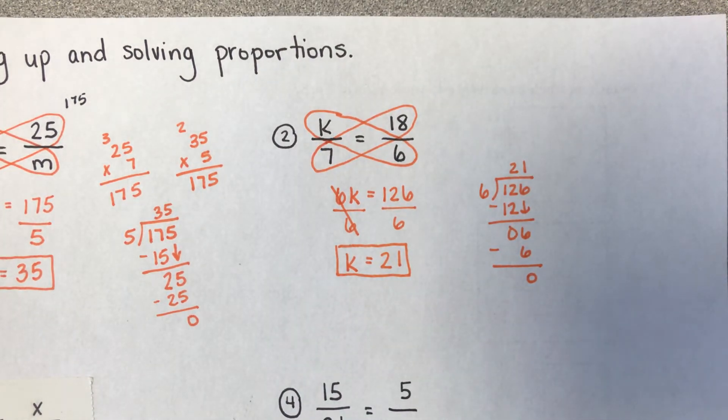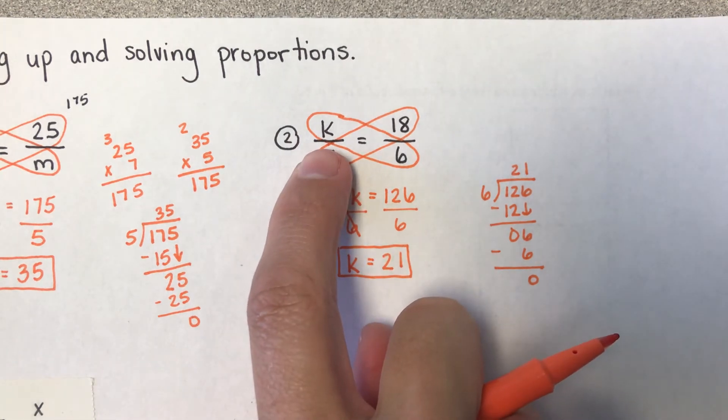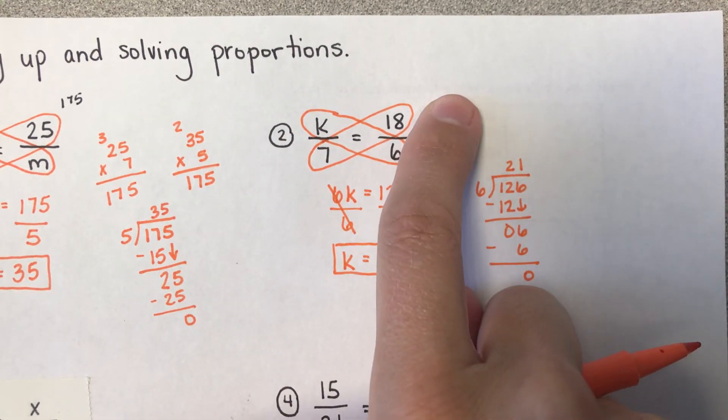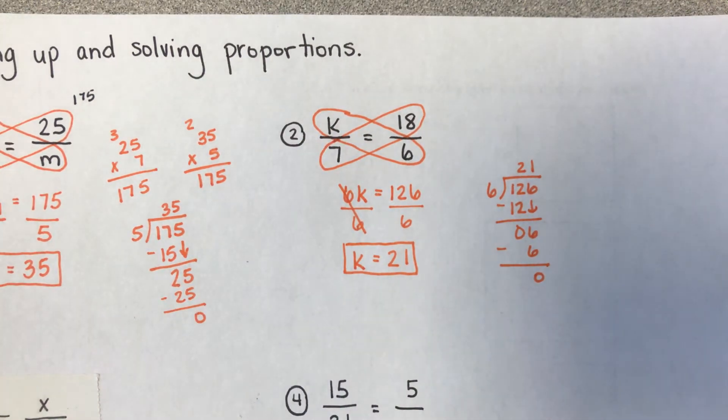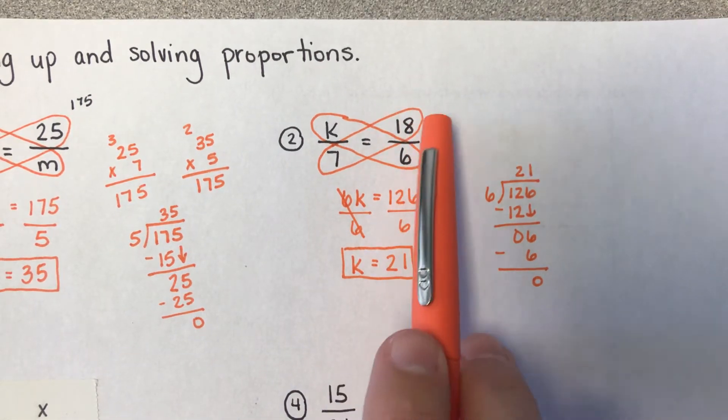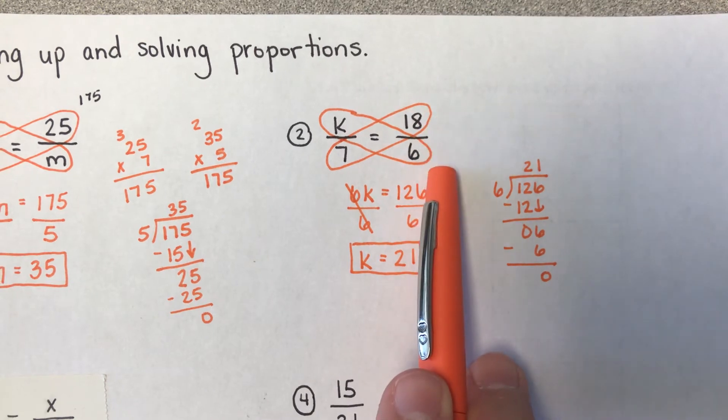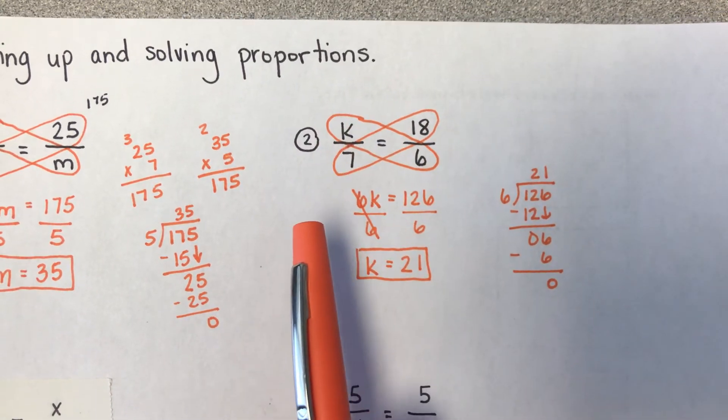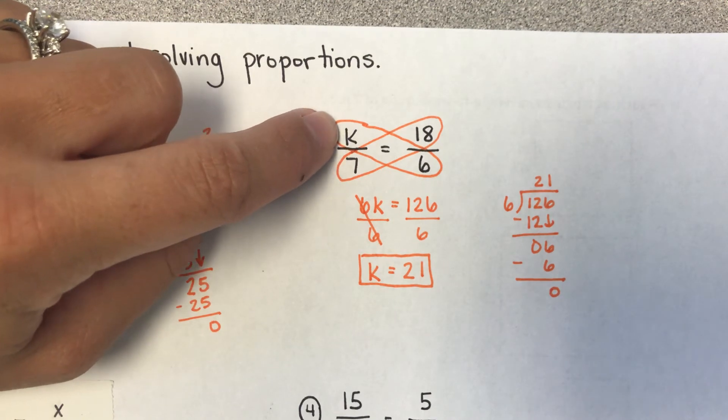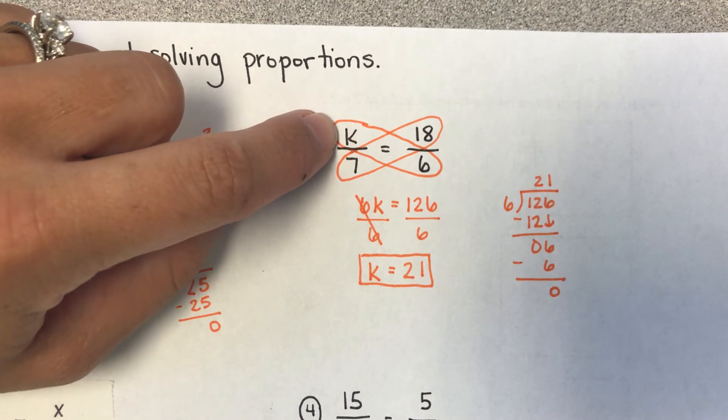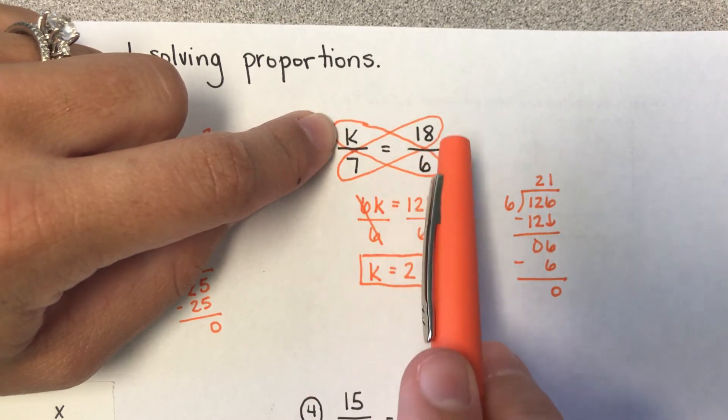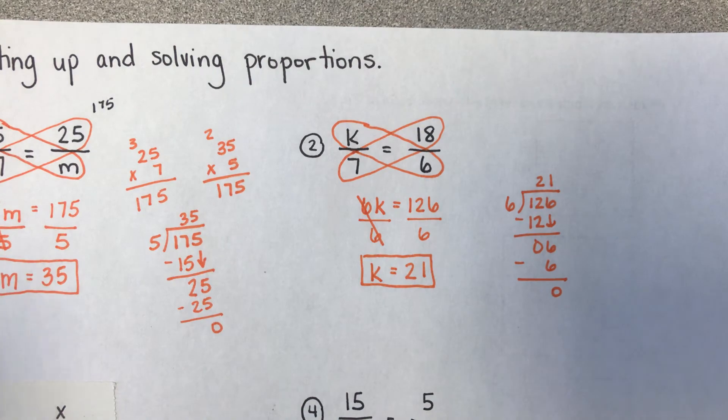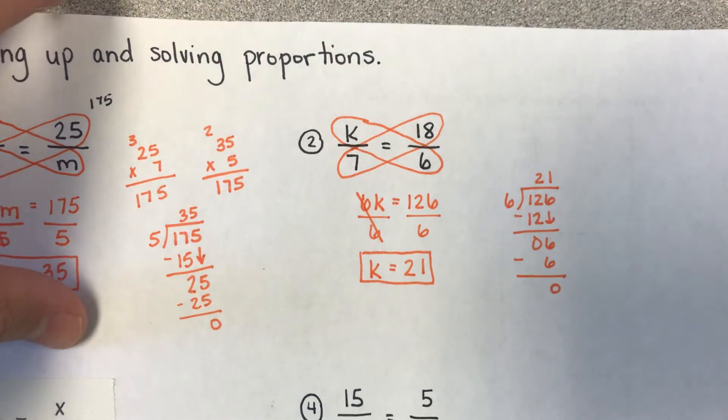And once again, if I plugged in this 21 right here, 7 times 18 gave me 126. If I do 6 times this 21 that I just found, it would also give me 126. Another thing to pay attention to is if this side over here is an improper fraction, so if the bigger number is on top, then whenever you get over here it needs to be the same way. So like if I had done this and if I had gotten 5 up here, I should have known that I had done something wrong because this side would have been a proper fraction, 5 sevenths, and this side would have been improper and that can't match up. Or if it's a proportion, both sides have to be equal to each other.